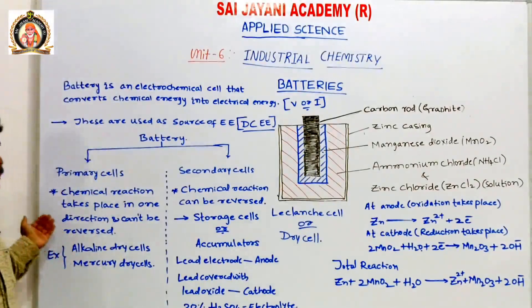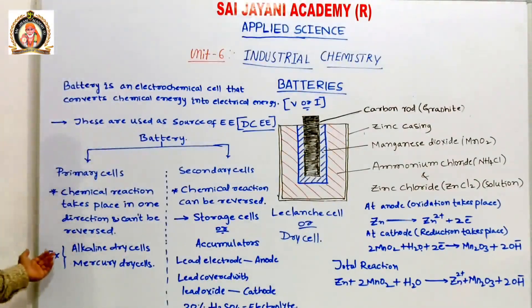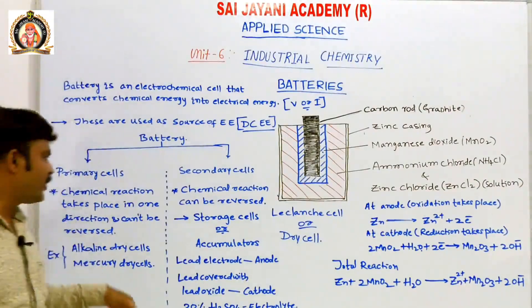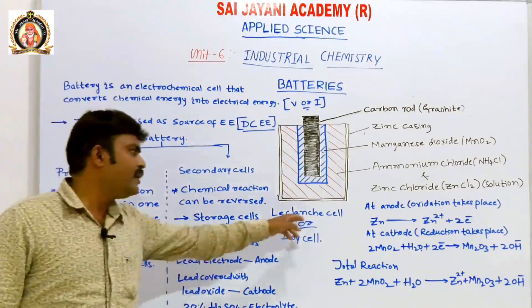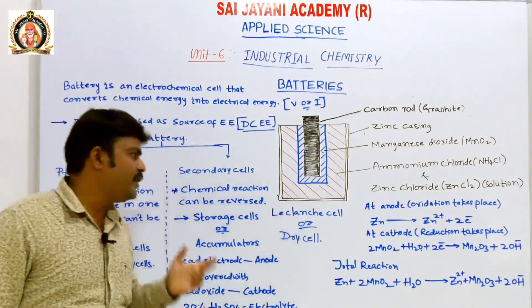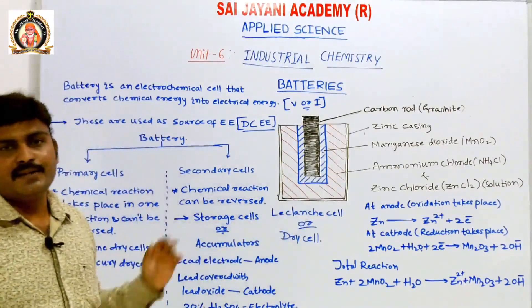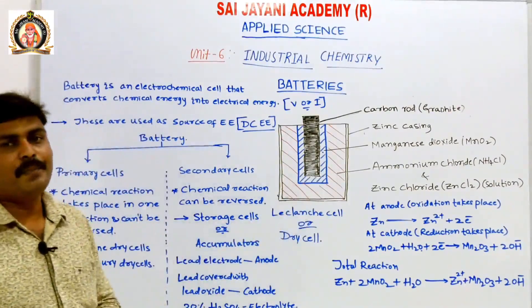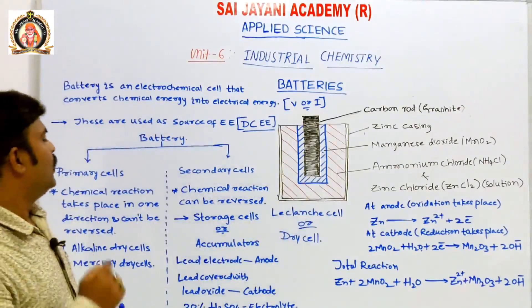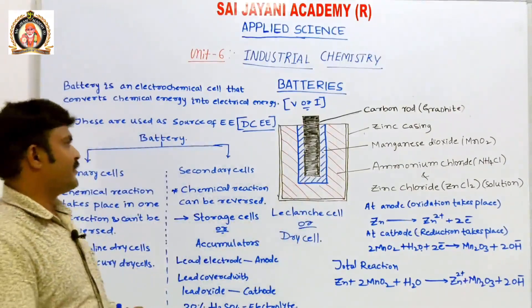Examples of primary cells are alkaline dry cells and other dry cell types. These are some examples of dry cells.